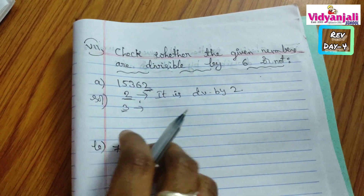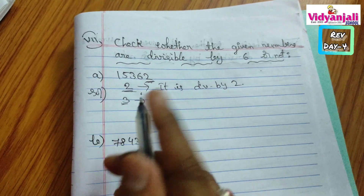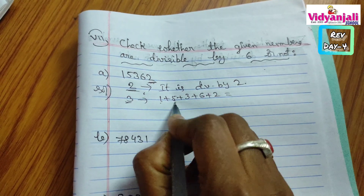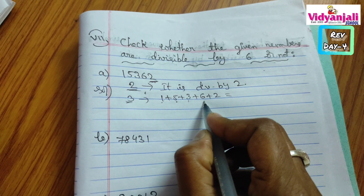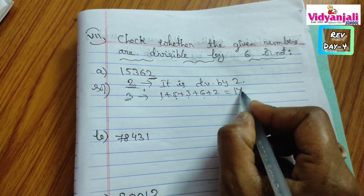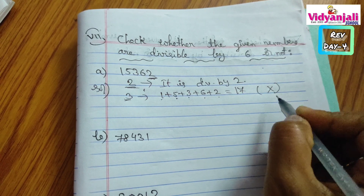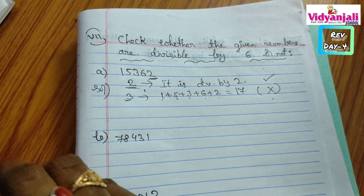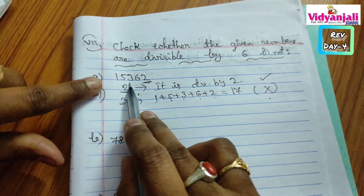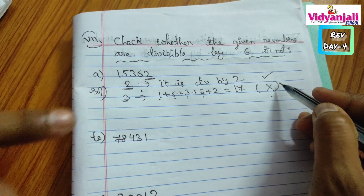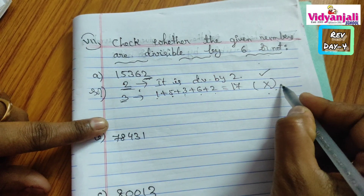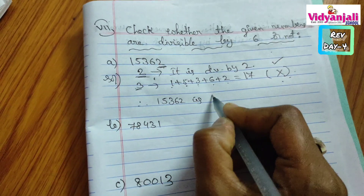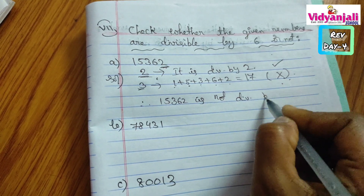How to check 3 divisibility? We add the sum of digits: 1 plus 5 plus 3 plus 6 plus 2. 1 plus 5 is 6, plus 3 is 9, plus 6 is 15, plus 2 is 17. Does 17 come in the 3 times table? No. So the given number is divisible by 2 but not by 3. Therefore 15,362 is not divisible by 6. It is divisible by 2 but not by 3.